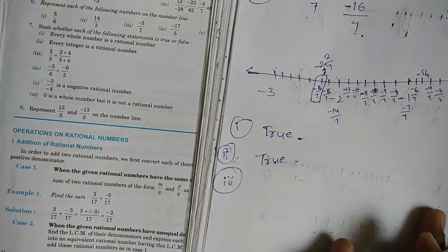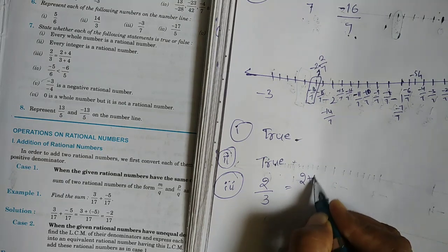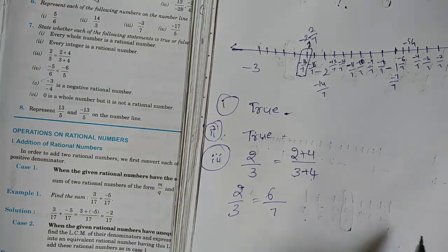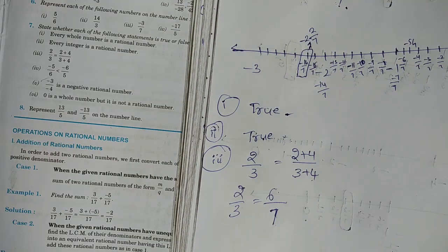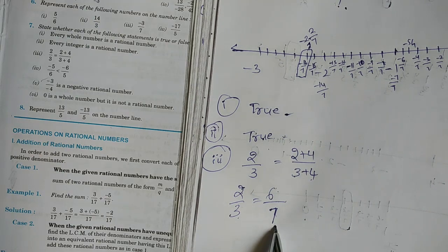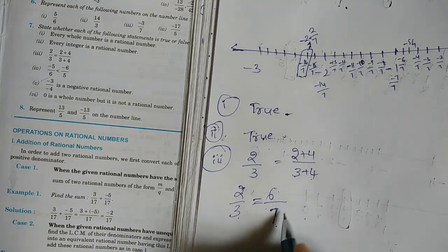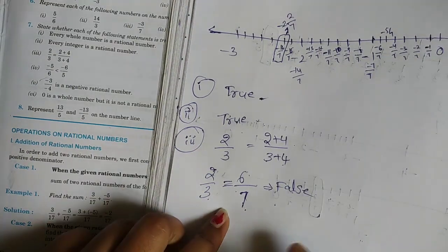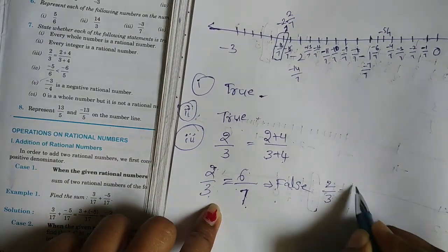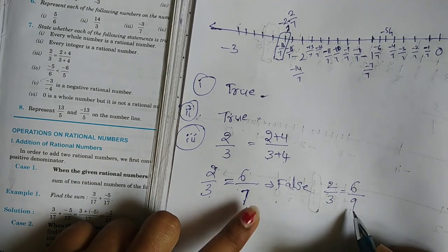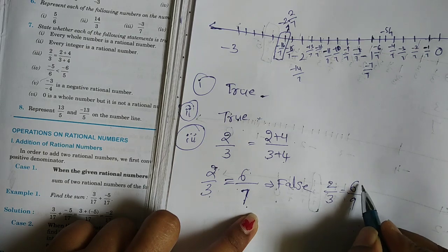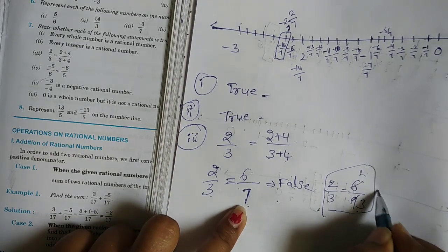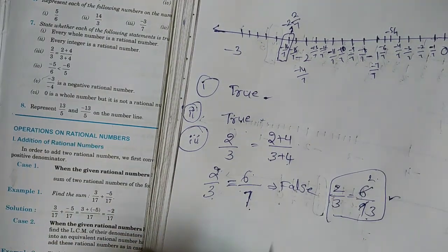Third one: 2 by 3 equals 2 plus 4 by 3 plus 4. That gives 6 by 7. Now 2 by 3 does not equal 6 by 7, so this is a false statement. For it to be true, the denominator would need to be 9 — for example, 2 by 3 equals 6 by 9. But here the denominator is 7, so this is false.